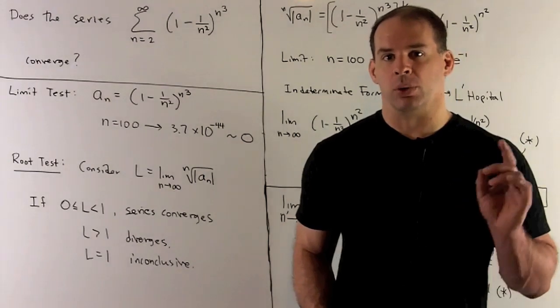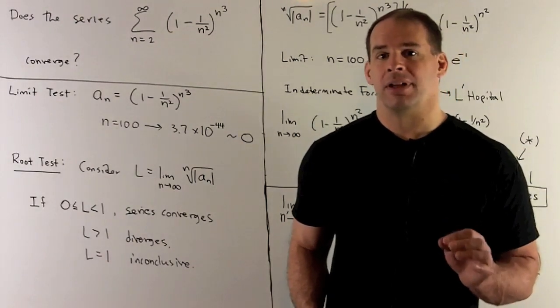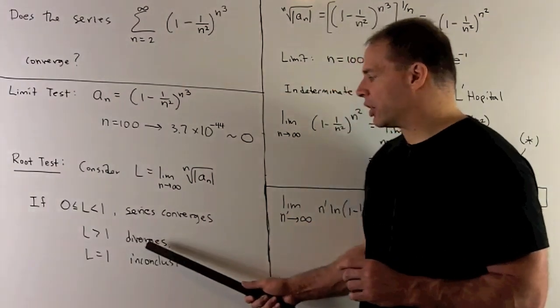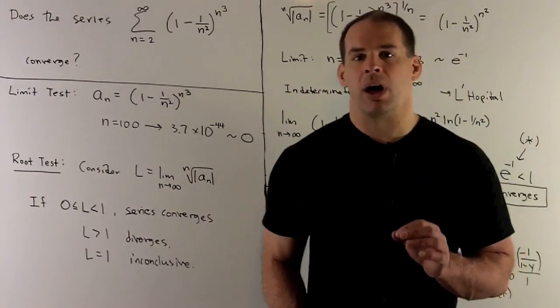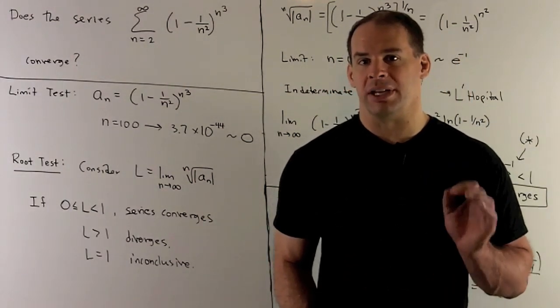If this limit is between 0 and 1, our series converges absolutely. If our limit's bigger than 1, then we're going to have divergence. If it's equal to 1, it's inconclusive, and we need to do more work.